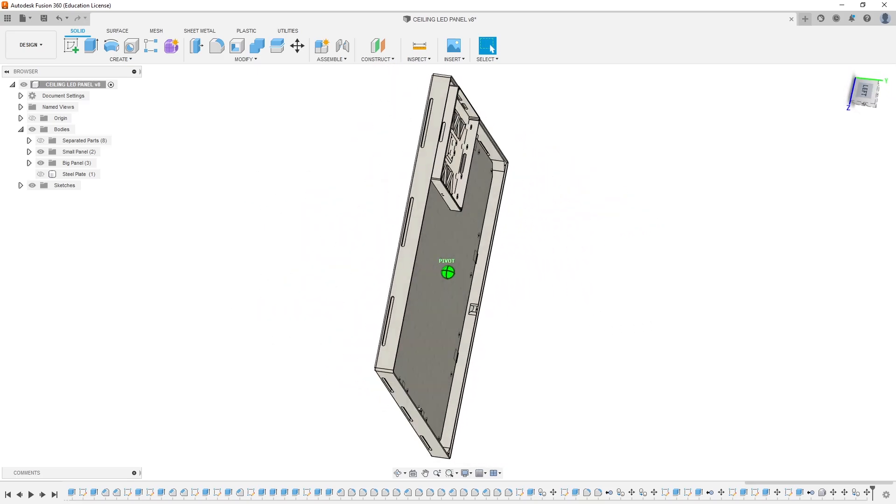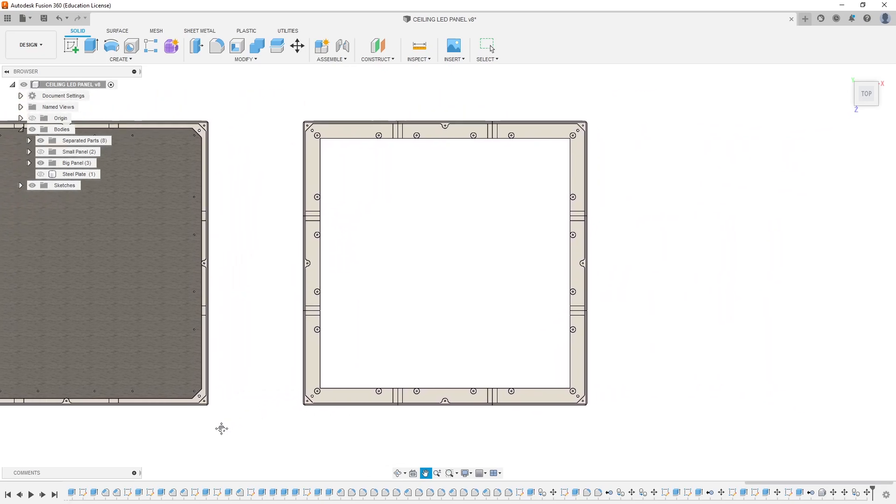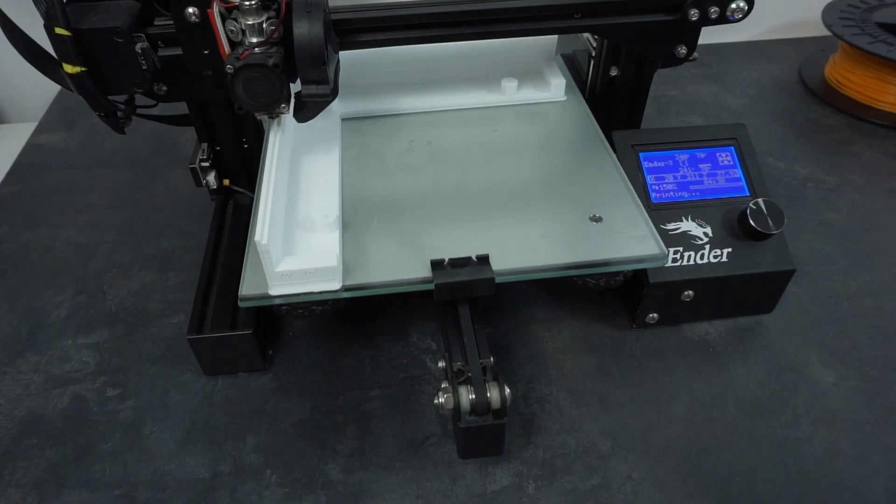But the question you may ask right now is: how can this even be printed? Well, it can't. That's why I separated the frame into 8 smaller pieces that can be printed and later merged together.